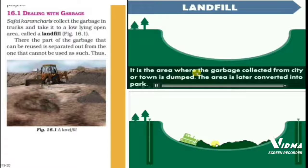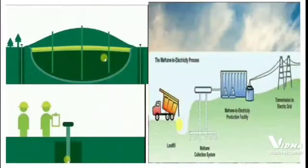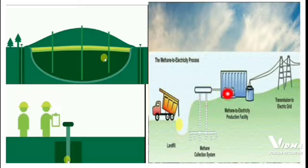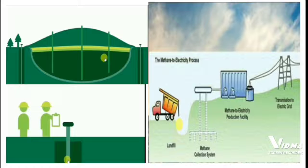While the materials are decomposing, no construction can be done on that land for about 20 to 30 years until the materials decompose and the soil loosens. During this decomposing process, the biodegradable waste releases methane gas, which is very useful. It is collected and converted into energy like electricity, and it is also used as fuel.